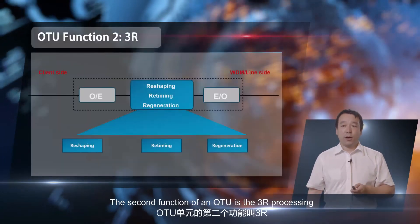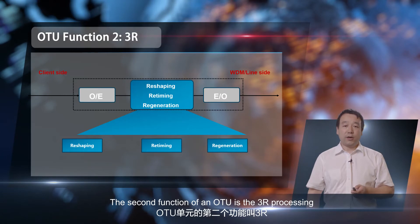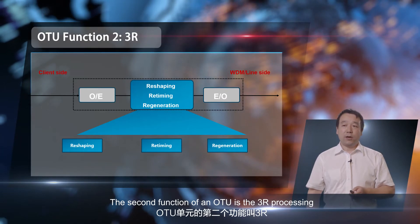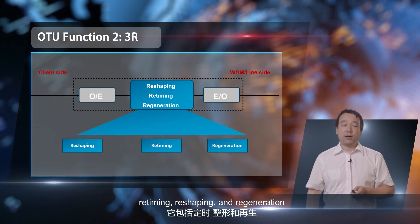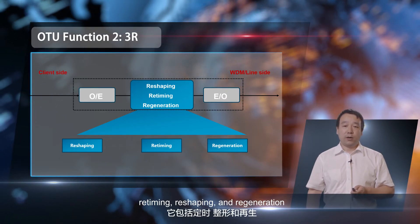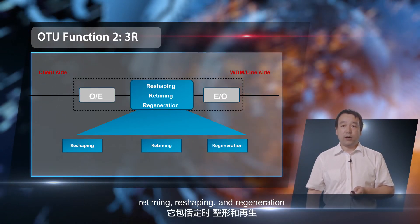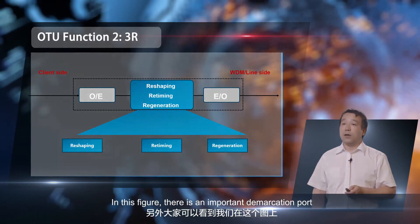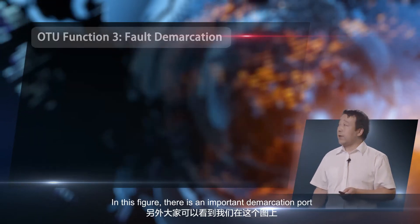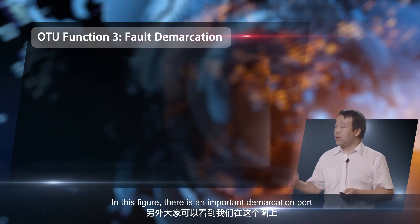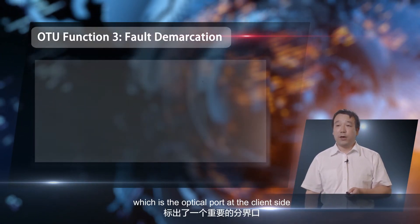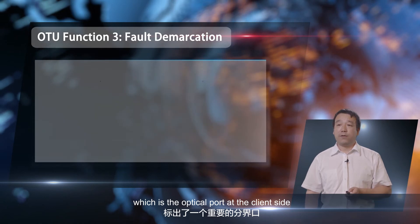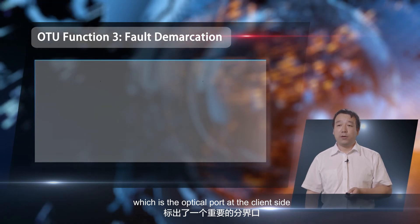The second function of an OTU is 3R processing: retiming, reshaping, and regeneration. In this figure, there is an important demarcation port, which is the optical port at the client side.